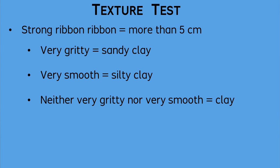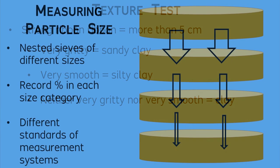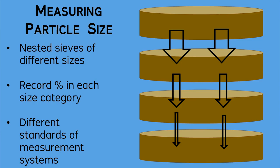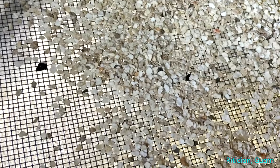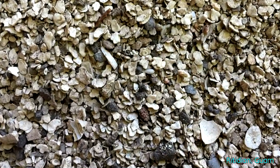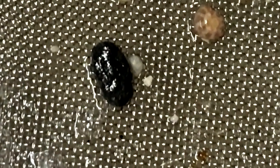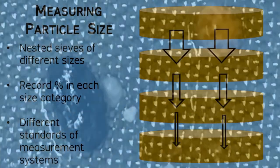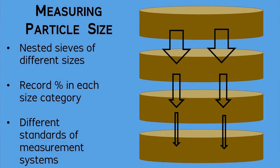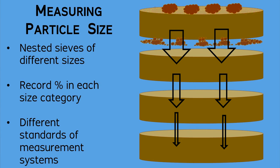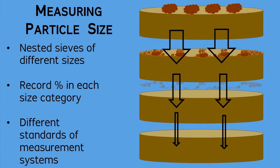If you prefer to measure more precisely about the percentage of each particle size category, then you can sift a sediment sample through a set of geological sieves. Each sieve contains a wire mesh of different measured size. First, you arrange the sieves from largest to smallest to catch each size category separately. Next, you measure the percentage in each category. This approach is reliable, but you should be aware that different standards of measurement systems have been developed for various purposes.